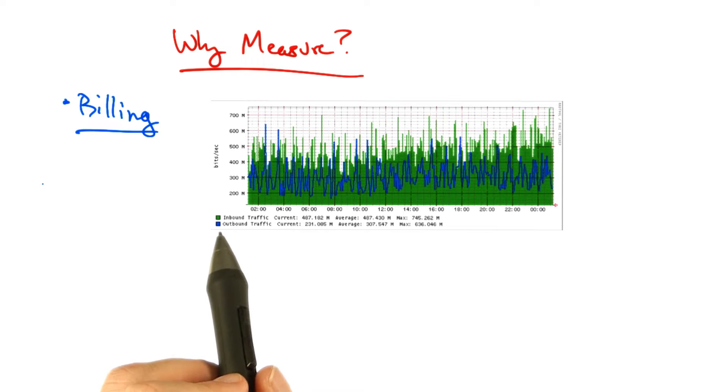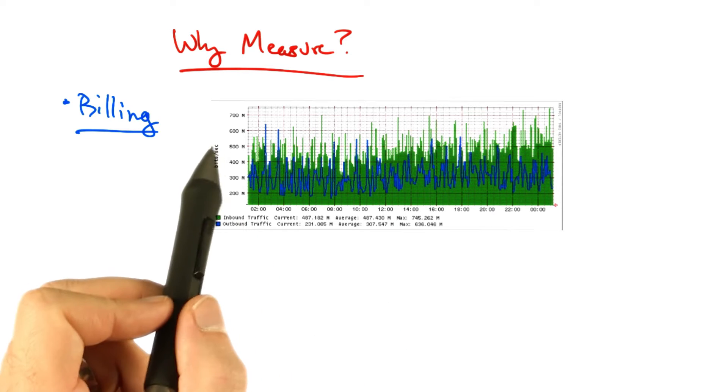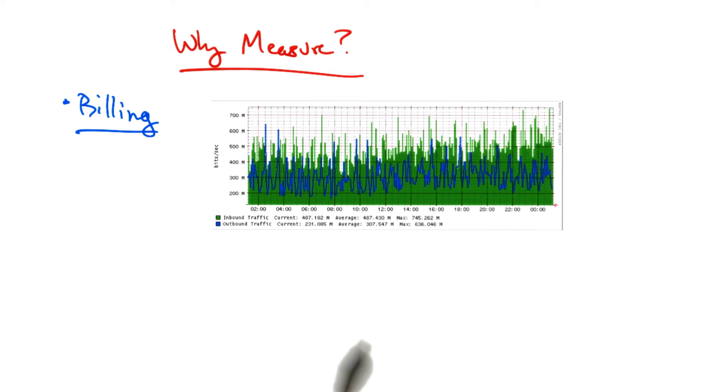Here's an example of measurements of inbound and outbound traffic volumes on a link on the Georgia Tech campus network. The y-axis is shown in bits per second, and the x-axis is the time of day.